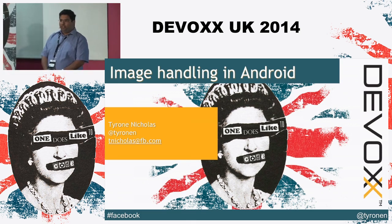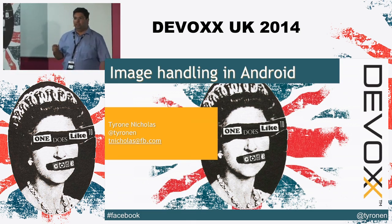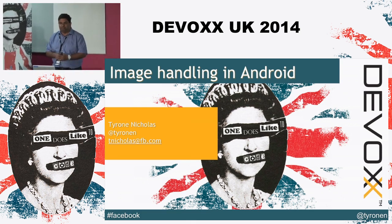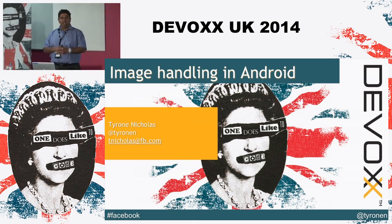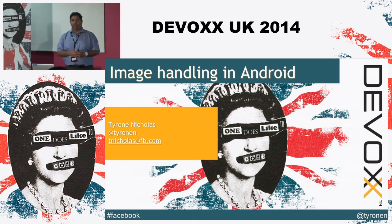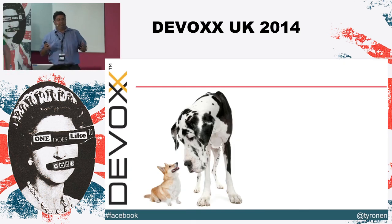So out of curiosity, how many of you here are Android developers? Almost everybody, excellent. And how many of you here have problems with images? Quite a few. Image handling is quite difficult, and the reason it's difficult is a simple asymmetry.